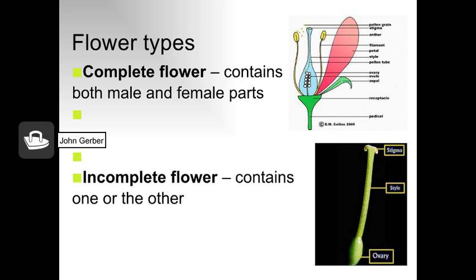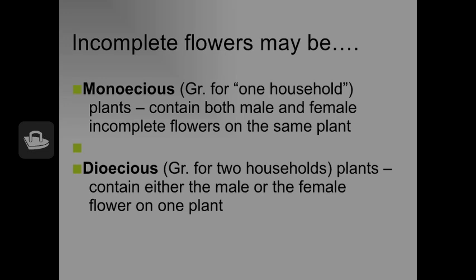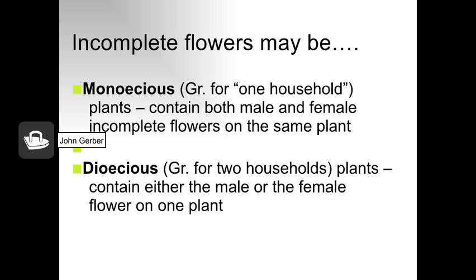Some flowers are called complete because they contain both male and female parts; others are called incomplete as they contain either one or the other. There are two types of plants with incomplete flowers. Monoecious plants have separate male and female flowers on the same plant — things like corn and pecan. Dioecious plants have separate male and female plants — examples include holly, ginkgo, and pistachio.